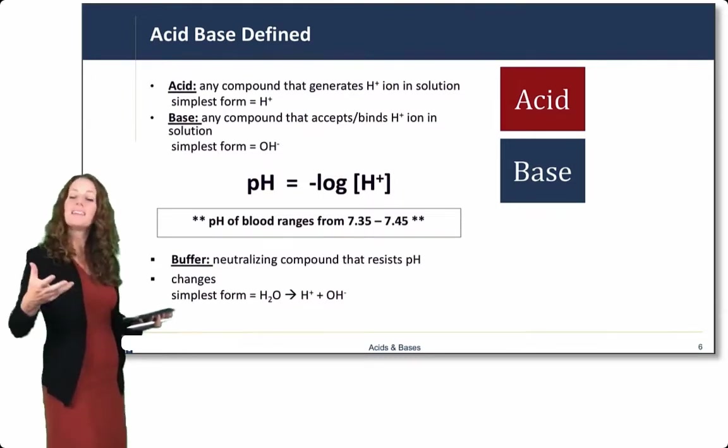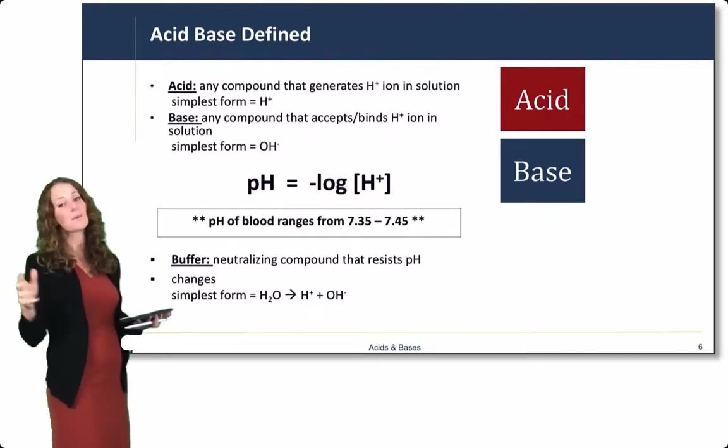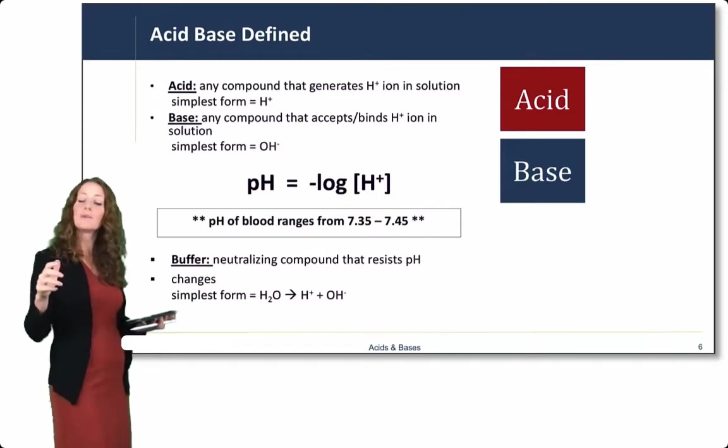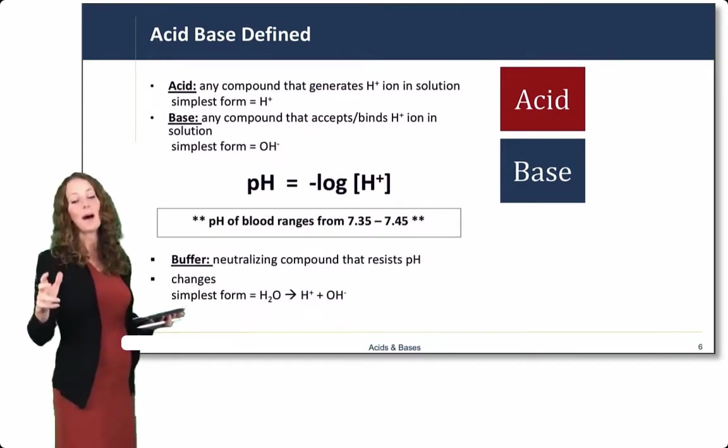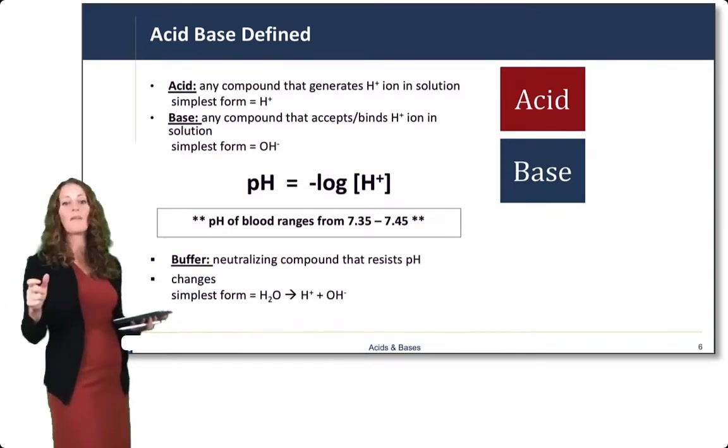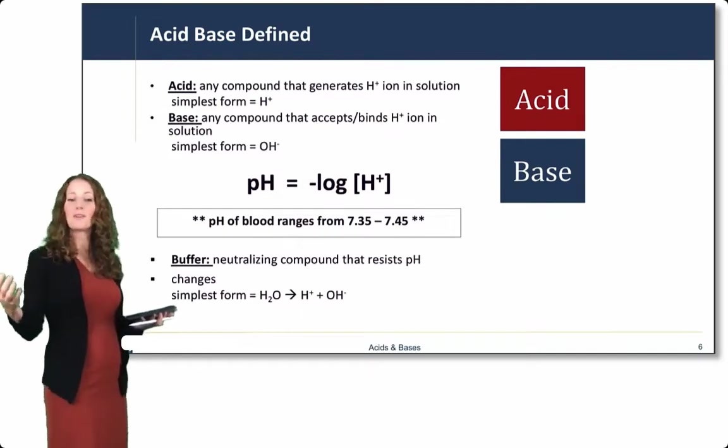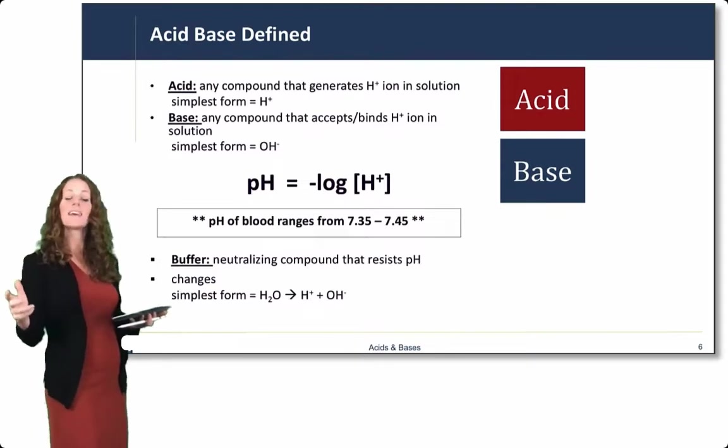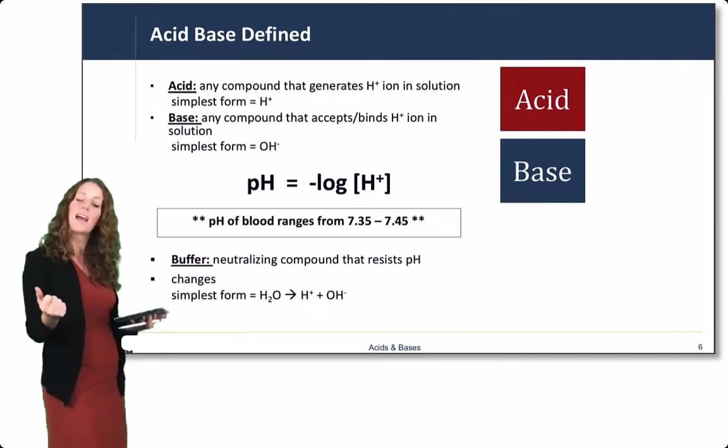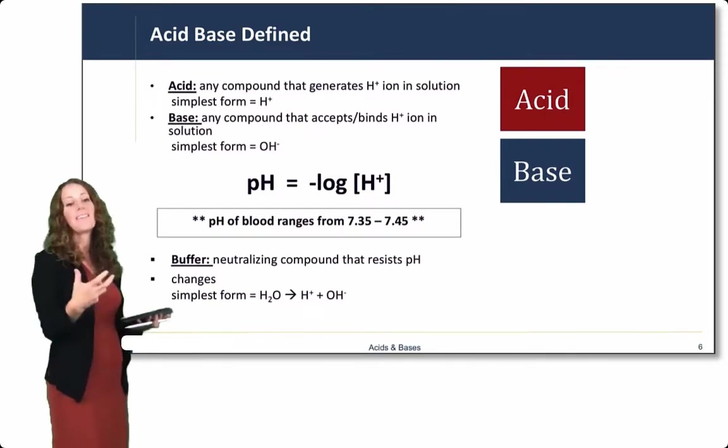pH is the negative log of the hydrogen ion concentration. The pH of blood is neutral, ranging from about 7.35 to 7.45. Buffers in the blood and in the body help to neutralize pH. A buffer is a neutralizing compound that resists pH changes. The simplest form of a buffer is water. Water dissociates into hydrogen and hydroxide ions. If there are excess protons in a solution, those can combine with hydroxide ions to form water, and that buffers that solution.